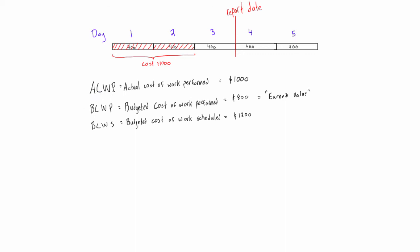So last video we learned what ACWP, BCWP, and BCWS are. In this video I will be introducing what the cost performance index is and the cost variance.